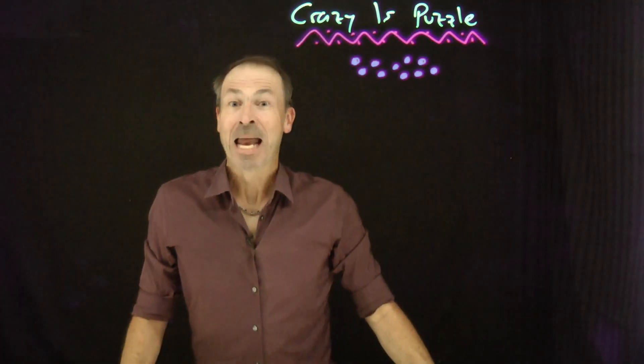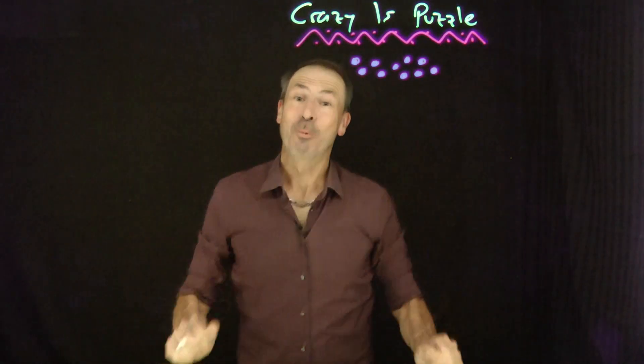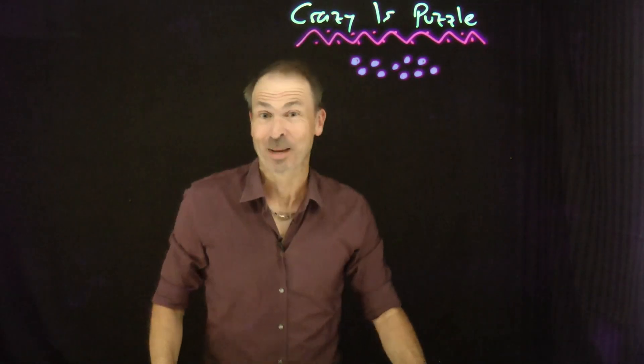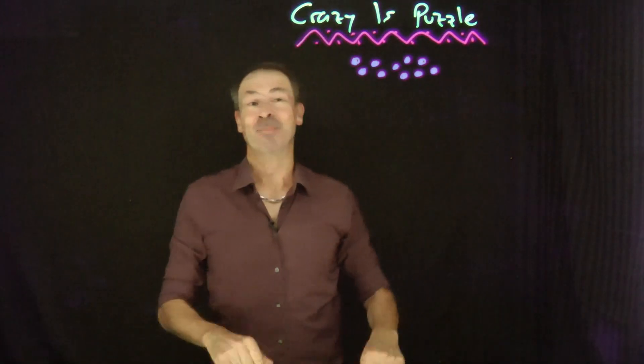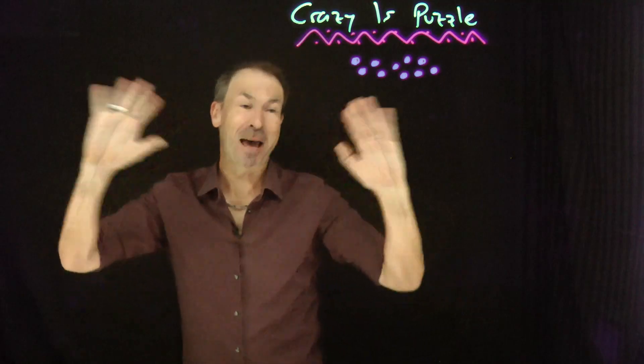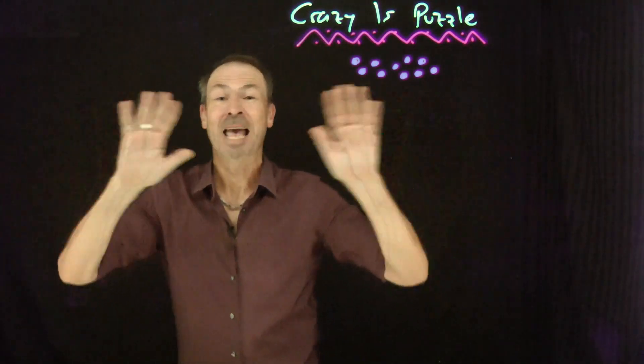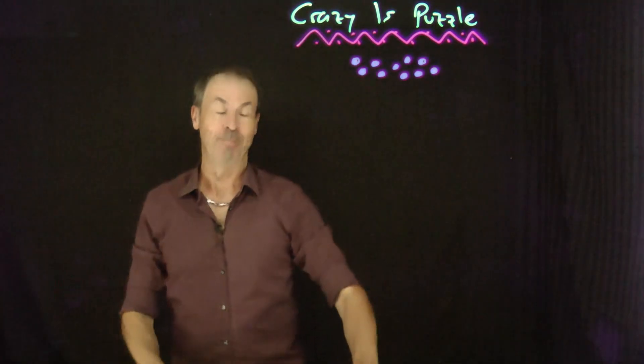G'day, I'm James and welcome to a puzzle I'm calling The Crazy Ones Puzzle. It goes as follows: take 10 objects like 10 pebbles, 10 coins, 10 cucumbers, 10 whatevers.